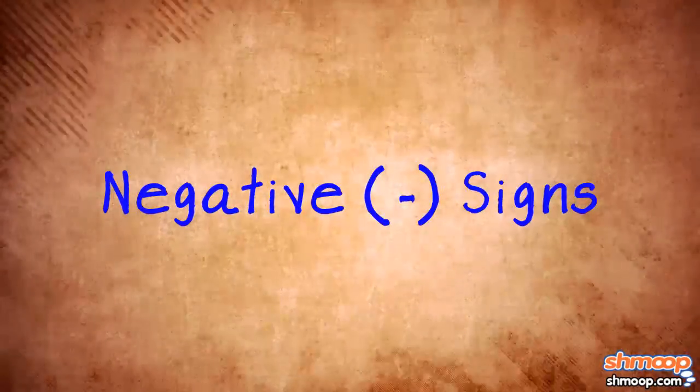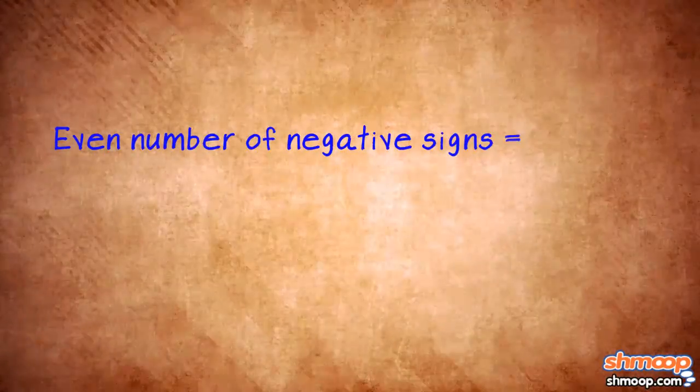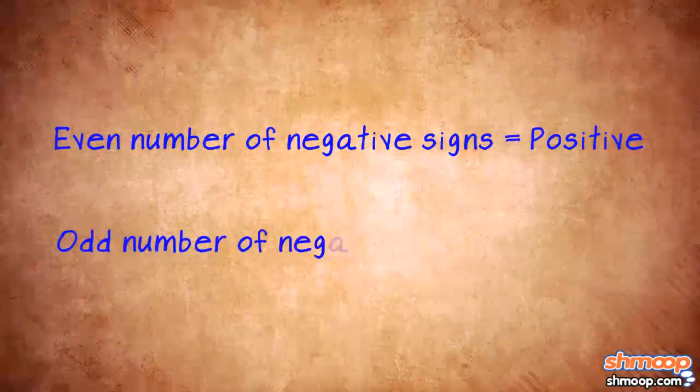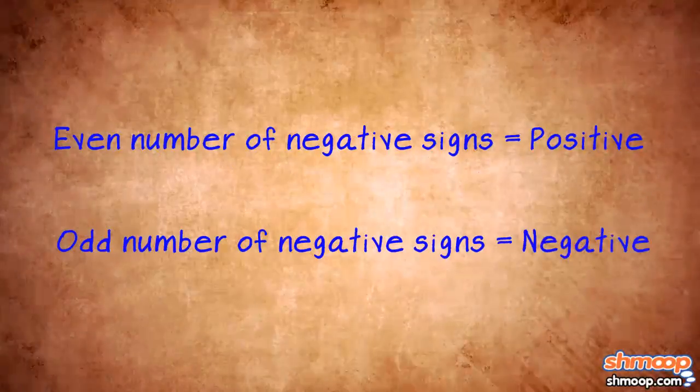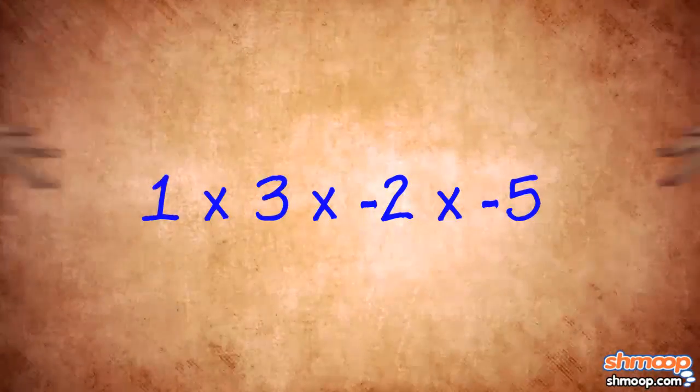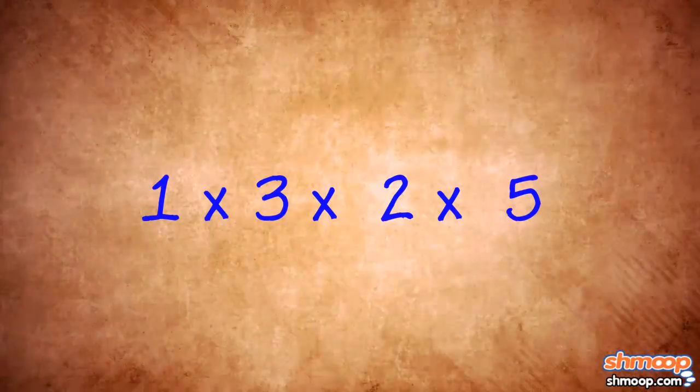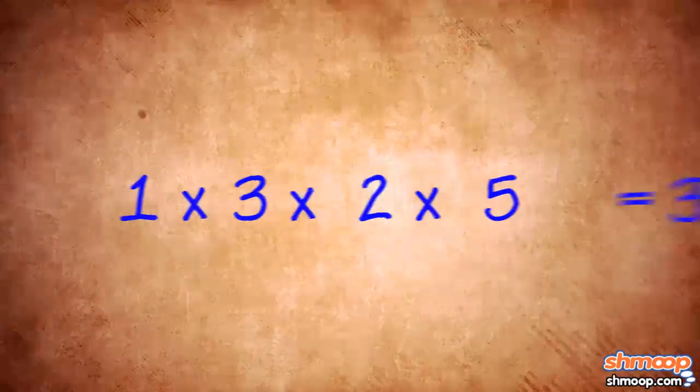Next, she counts the negative signs. If there's an even number of them, they cancel out. But if there's an odd number of them, then the answer becomes negative. She's got two negatives here, so they cancel. Negative times a negative is a positive, and the final answer is just positive 30.